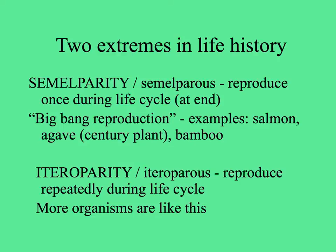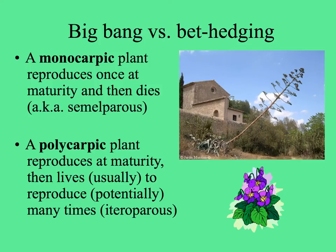The other option is to be iteroparous — organisms that reproduce repeatedly during their life cycle. More organisms and more plants fall into this category. Botanists use the term monocarpic for semelparous plants: those that reproduce once at maturity and then die. Here's an agave that has given its all to make a huge inflorescence, using over 75% of its biomass. A polycarpic plant is iteroparous, reproducing at maturity and potentially many times during its life, like the understory perennial violets shown here.